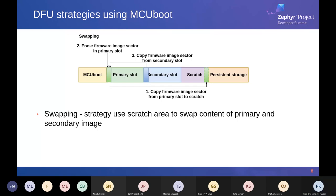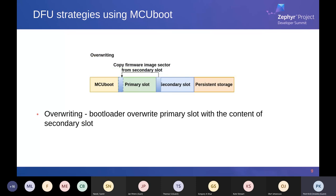The second strategy is to just overwrite the primary slot. The problem is that if our updated image is broken, we end up with a non-upgradable environment — we brick our device. This may be mitigated by prior testing, but this is definitely a more flawed strategy than the swapping one. Of course, the swapping strategy is more complicated, requires more coding, and more attention to detail.